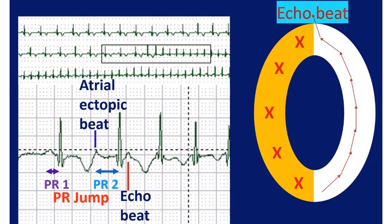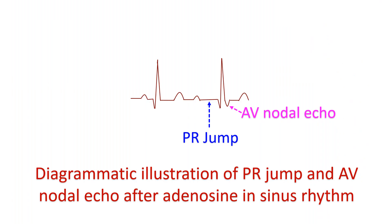Corresponding to the PR jump, during electrophysiology study, an AH jump can be demonstrated after an appropriately timed atrial extra stimulus. PR jump can also be induced by adenosine during sinus rhythm. In this case, PR jump is defined as a sudden increase in PR interval by 50 ms or more between two consecutive sinus beats.